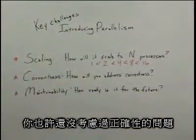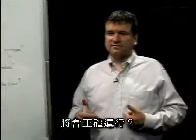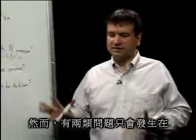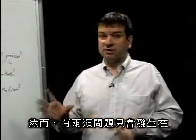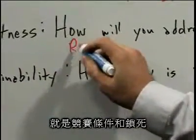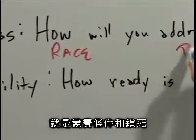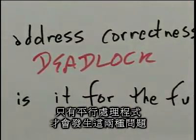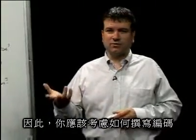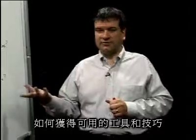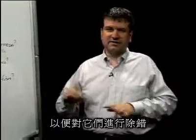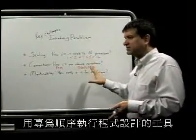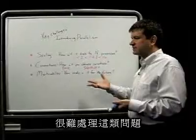One challenge that you may not have considered is correctness. How do you make sure that a parallel program is going to operate correctly? You may think that that's just normal debugging, but there are a couple of types of failures that can occur only in a parallel program. They're called race conditions and deadlock. These are two types of failures that can only happen in a parallel program, and you need to understand how to code in such a way as to avoid them, or have tools and techniques available to help debug or eliminate them.